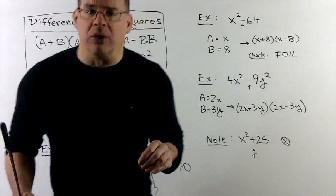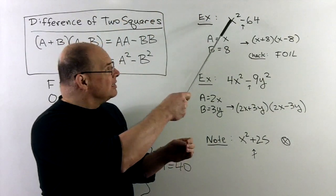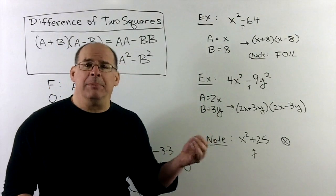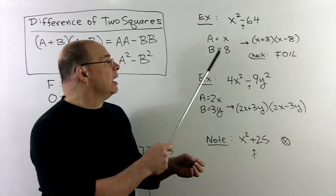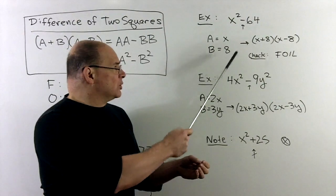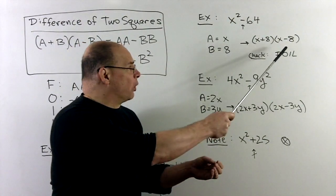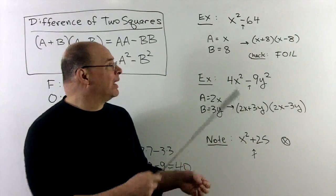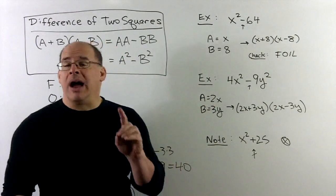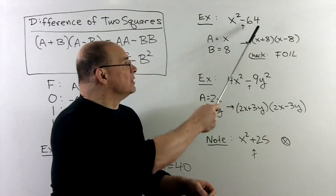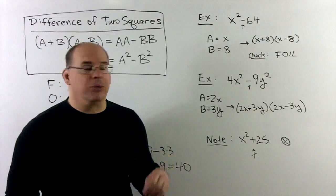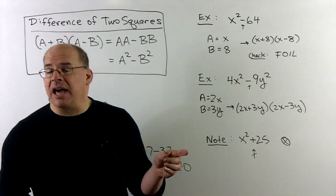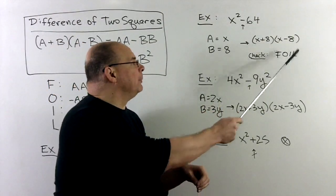Now we're interested in factoring quadratics — things like x² − 64. The bookkeeping I do here: since a and b can get complicated, I'll figure out what a and b are first, do some accounting on the side, and then drop things into the formula. So for x² − 64: x squares up to x², and 8 squares up to 64. I verify the negative sign in the middle, so difference of two squares applies, giving (x + 8)(x − 8).